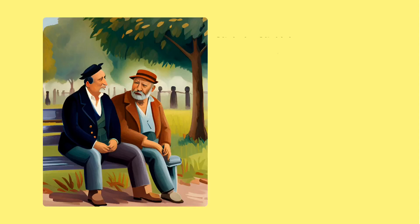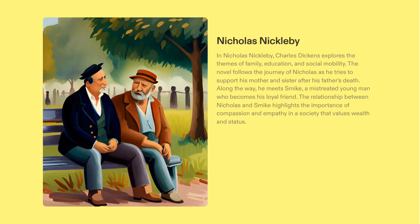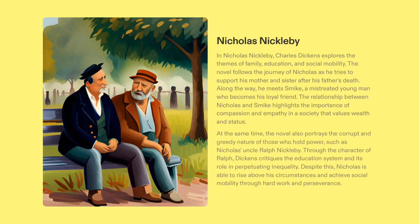Nicholas Nickleby is a classic Dickens novel which tells the story of Nicholas's journey to support his family as he contends with injustice and inequality. As he embarks on his journey, he is accompanied by the mistreated Smike, whose relationship with Nicholas emphasizes how compassion and empathy can help overcome the power of wealth and status. He also faces his uncle, Ralph Nickleby, whose character provides a critique of the education system and its role in maintaining unfairness. Despite this obstacle, Nicholas is able to find success and social mobility through determination and hard work.